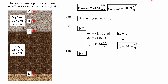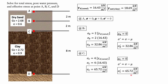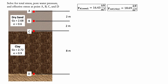At point C, total stress equals 4 meters multiplied by the dry unit weight of sand: 4 times 16.43 equals 65.72 kN/m². Pore water pressure is equal to 0, and therefore effective stress at C is also equal to 65.72 kN/m².